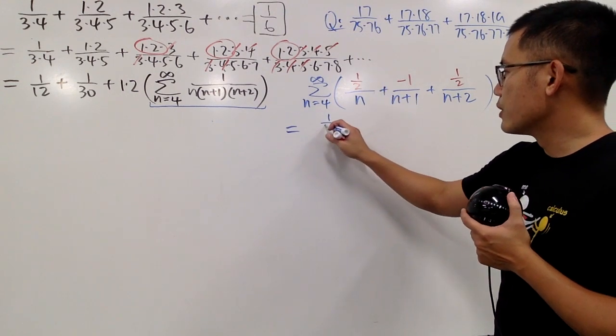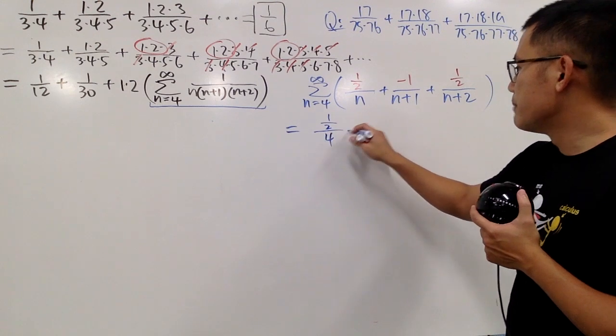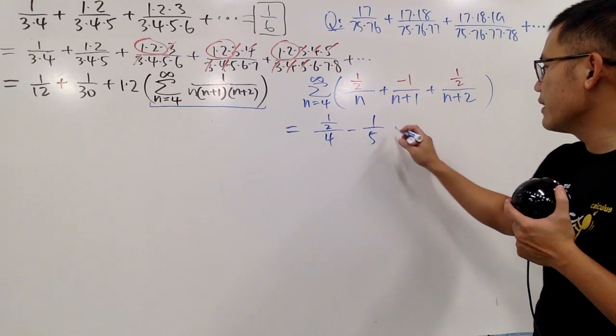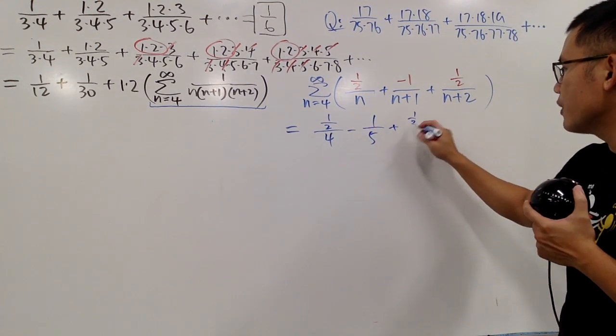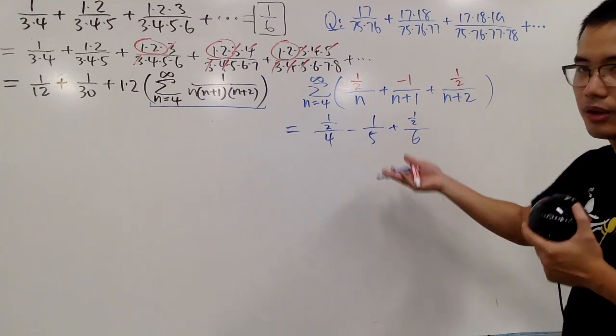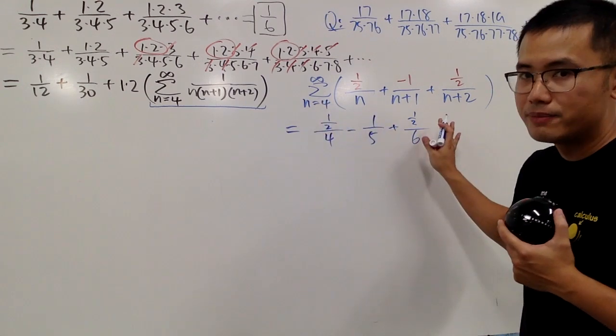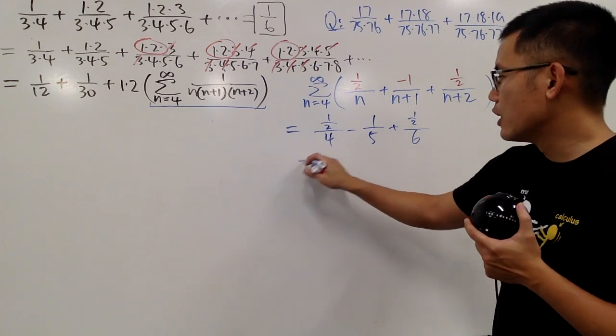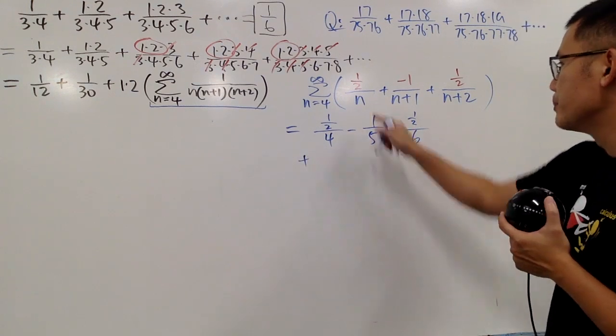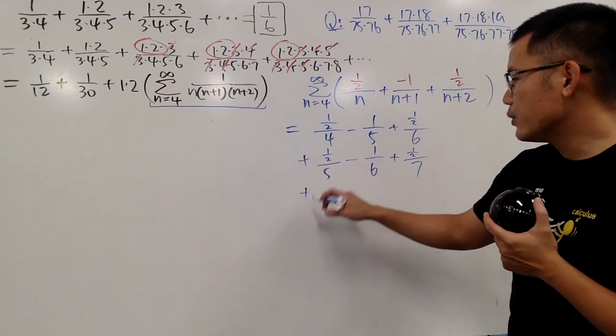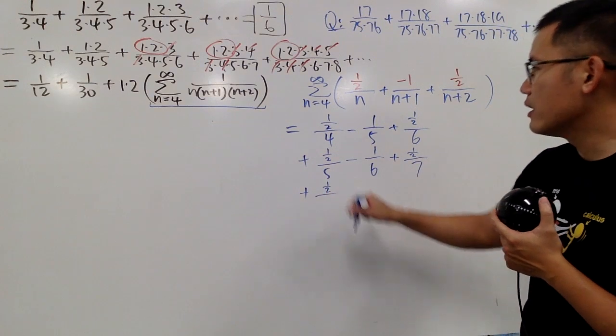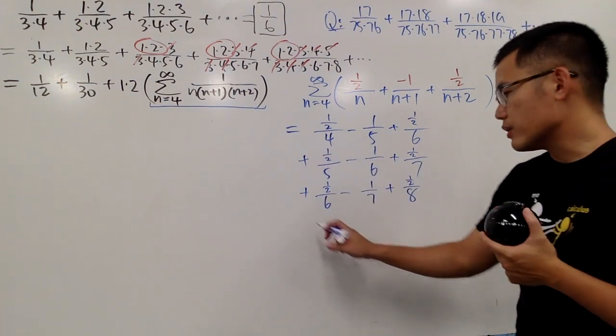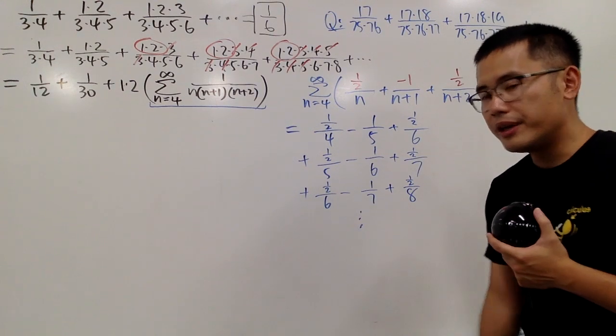First term is one over two over four, minus one over five, and then the next one is plus one half over six. So, this is when n is equal to four. And of course, we do the next, when n is equal to five. Put it here, put it here, put it here. Then, we add one half over when n equals six. So, this right here will keep on going.